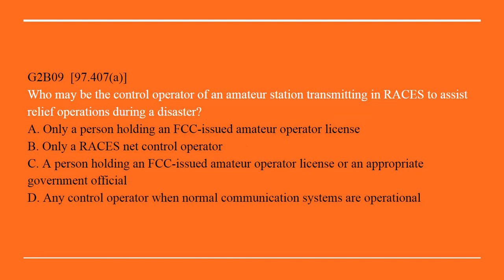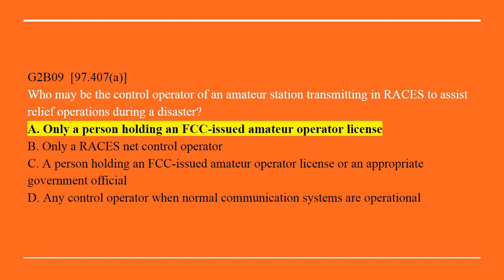G2B09: Who may be the control operator of an amateur station transmitting in RACES to assist relief operations during a disaster? A. Only a person holding an FCC-issued amateur operator license. B. Only a RACES net control operator. C. A person holding an FCC-issued amateur operator license or an appropriate government official. D. Any control operator when normal communication systems are operational. Correct answer is A: Only a person holding an FCC-issued amateur operator license.